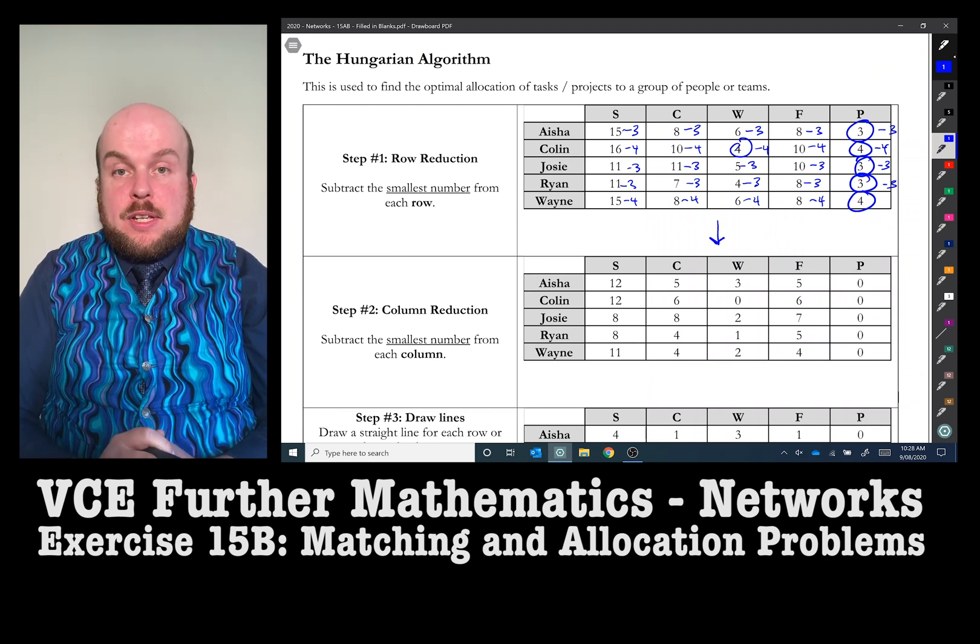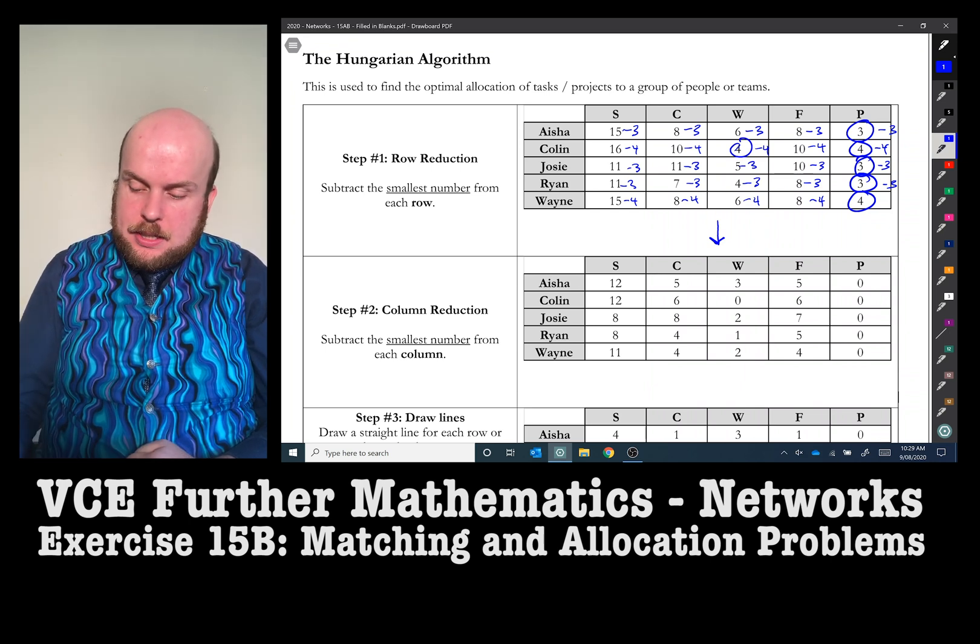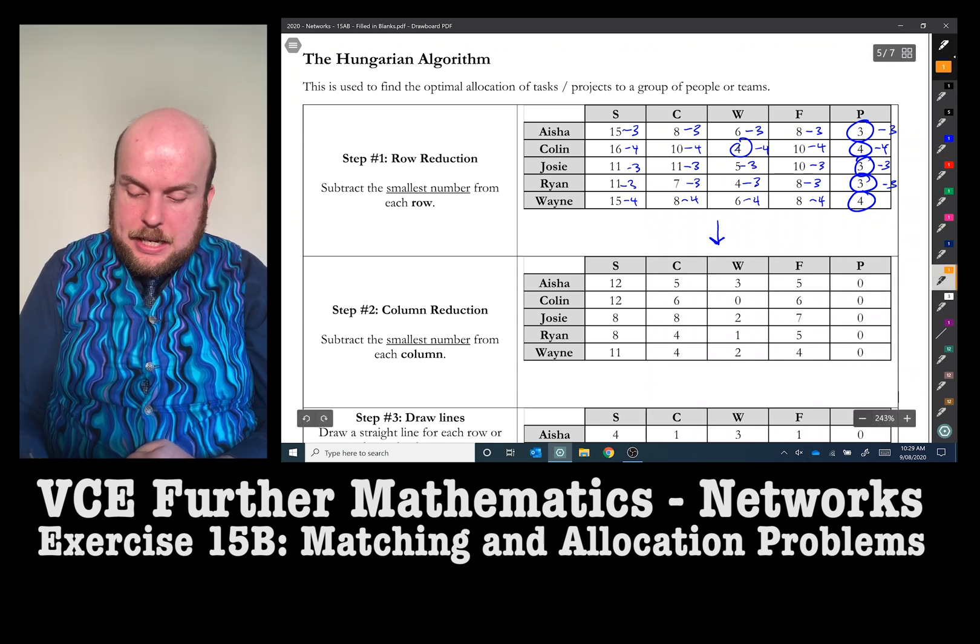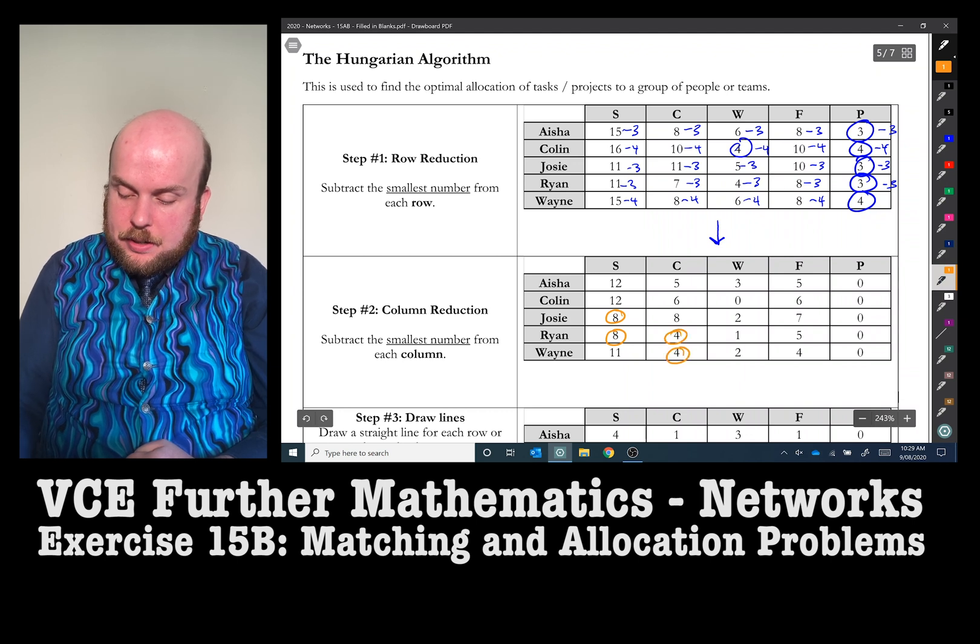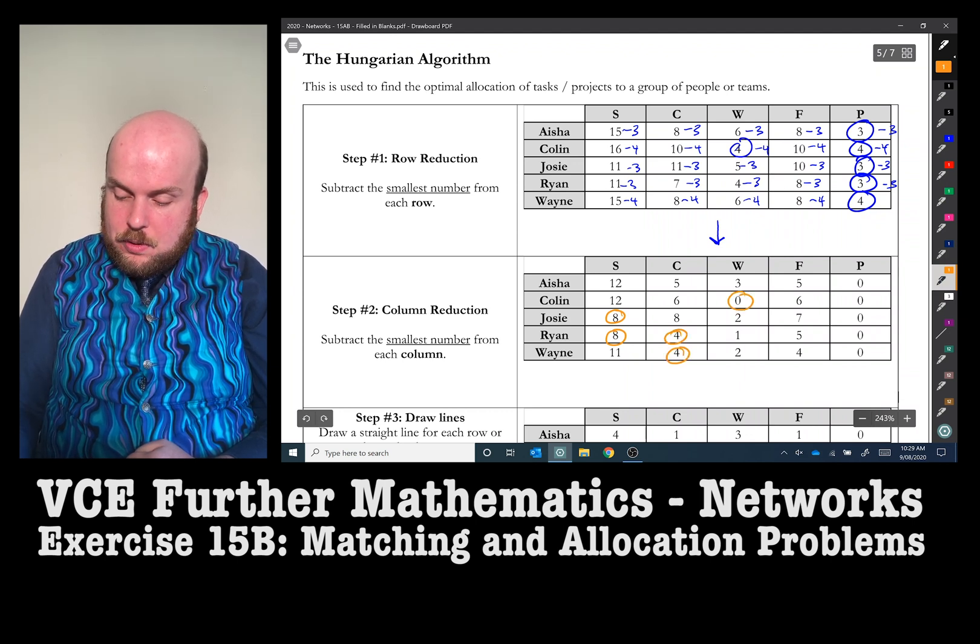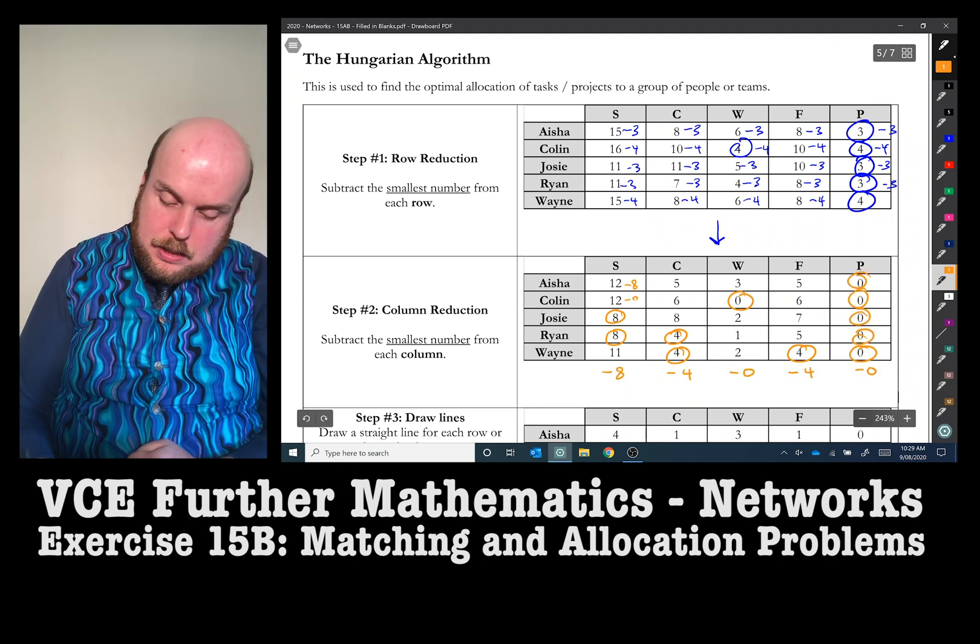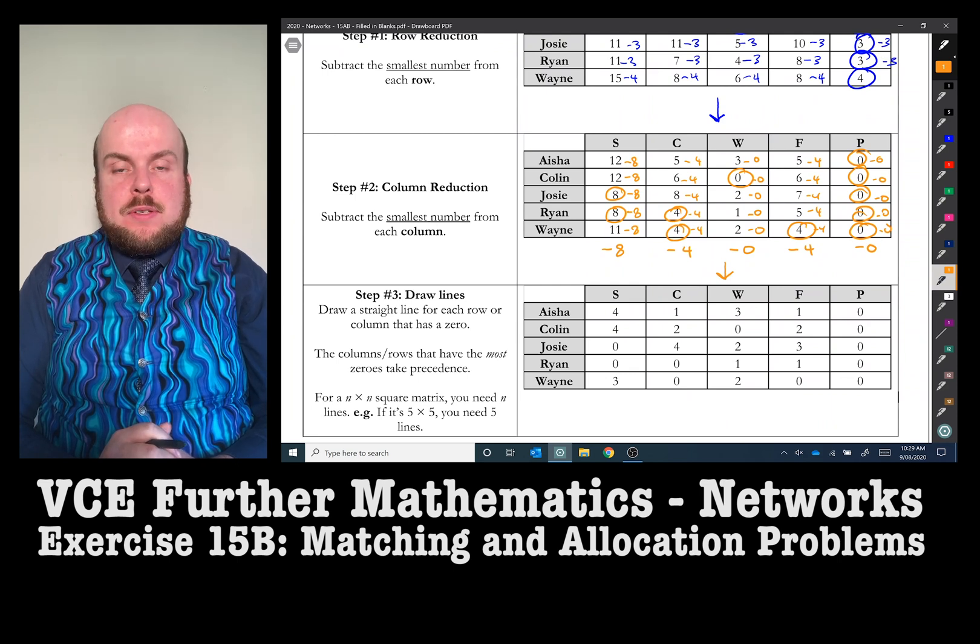Once you've subtracted all of the smallest numbers from each row, you then look for the smallest number in each column and you subtract that from each of the numbers. In this case, the smallest number from each column will be 8, 4, 0, 4, and 0.